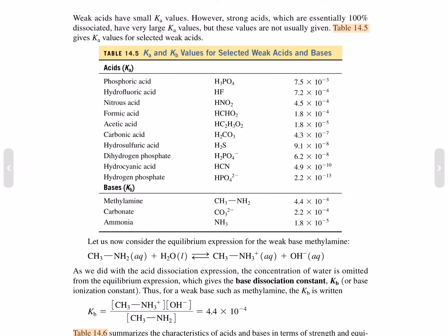Now let's consider the equilibrium expression for the weak base methylamine. Methylamine aqueous plus water yields methylamine cation plus hydroxide. As we did with the base dissociation expression, the concentration of water is omitted from the equilibrium expression, which gives the base dissociation constant, or the base ionization constant. Thus, for a weak base such as methylamine, K sub B is written.